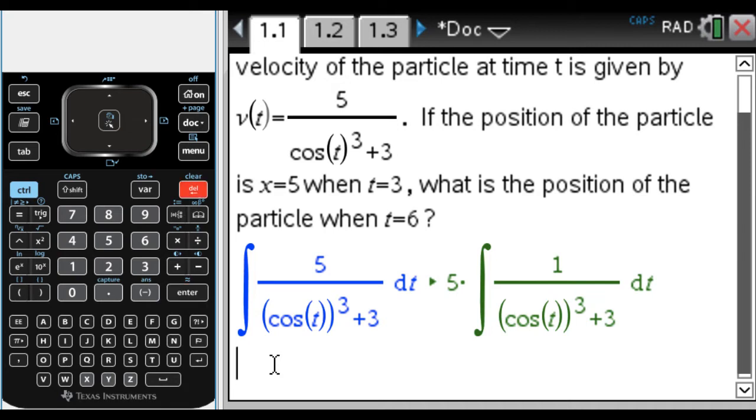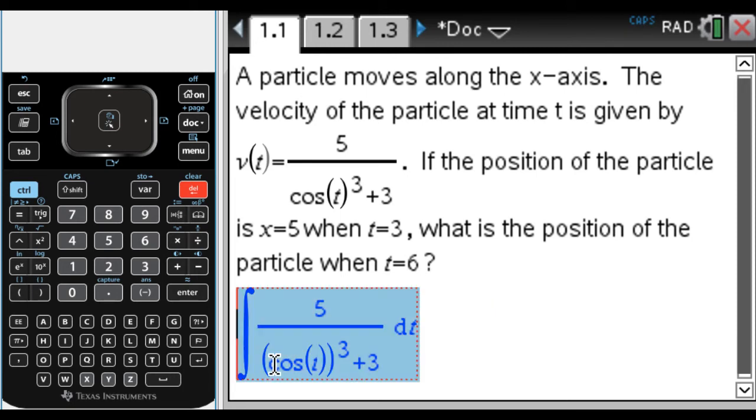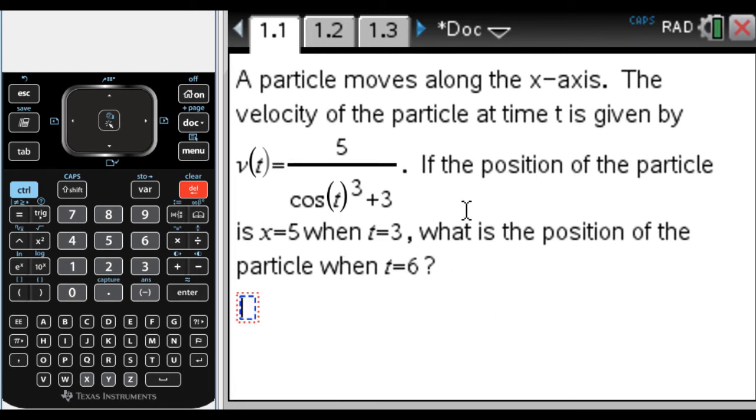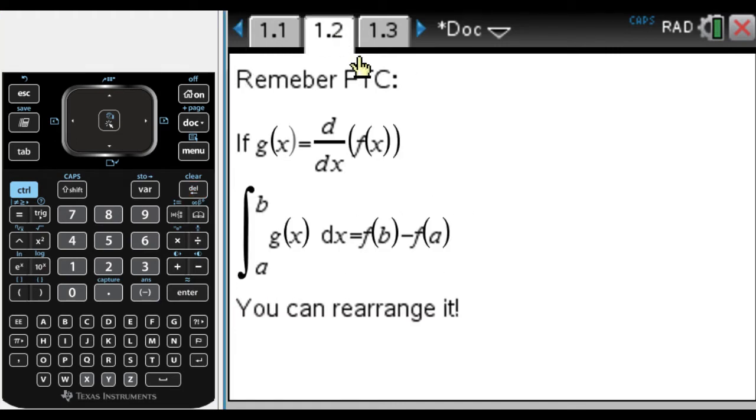So instead, I'm going to use the fundamental theorem. Remember, this problem doesn't say find an antiderivative and use it, it just says find position. So I'm going to use the fundamental theorem of calculus. If g(x) is the derivative of f(x), so g(x) = f'(x), then the integral from a to b of g(x), which is really f', equals f(b) - f(a).